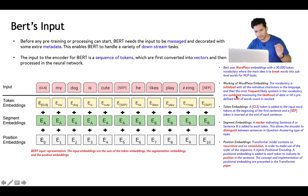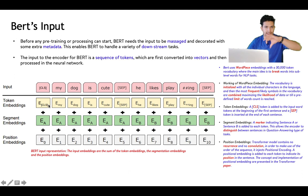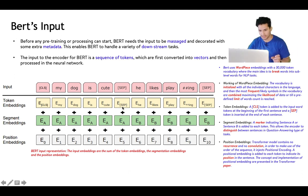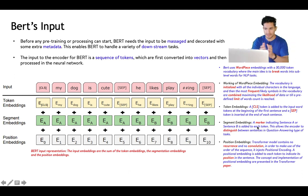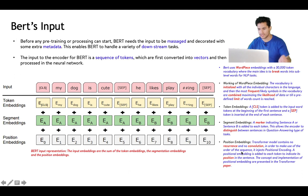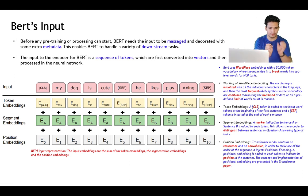BERT uses word-piece embedding for token embeddings. There is a class token that precedes the first sentence, and a separator between the two sentences. Segment embedding marks which is sentence A and which is sentence B. Position embedding is injected since there is no recurrence or convolution, helping the network understand which position each word is at, which helps the network learn faster.